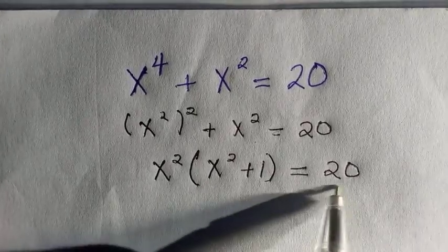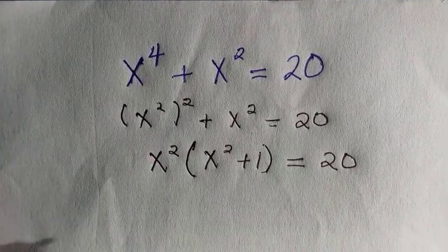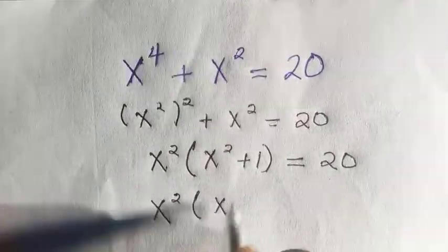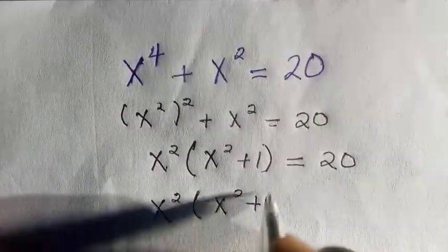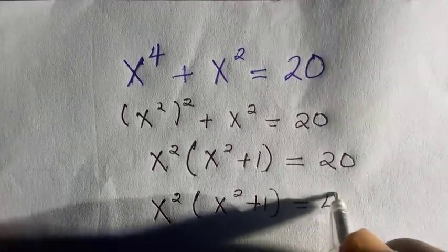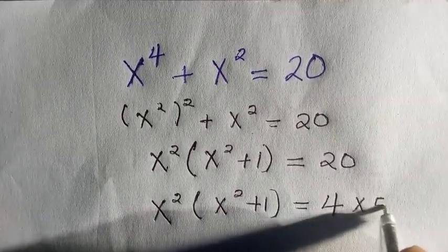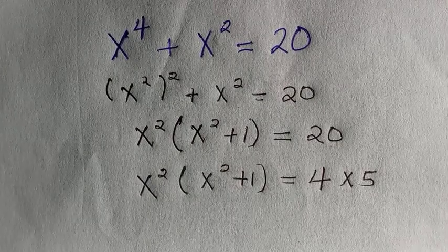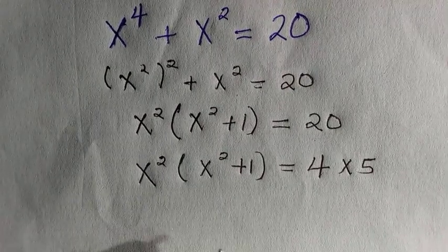And this 20, if I write it as 4 multiplied by 5, then we have x to the power of 2, bracket x to the power of 2 plus 1, equals 4 multiplied by 5. Looking at this, I think something is making sense and we are getting there.